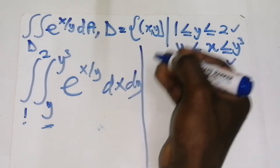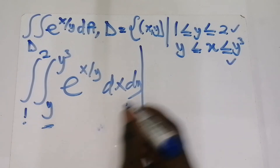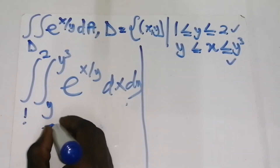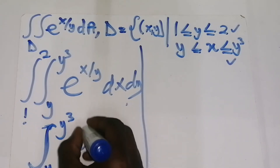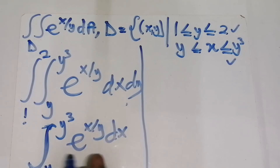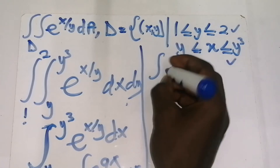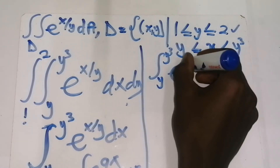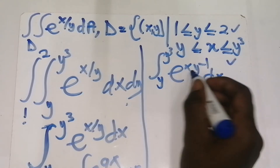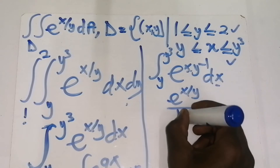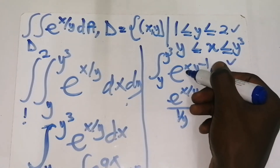After setting up, we solve the dx integral first — the inner one with the unknown variable limits. From integration, we know that integrating e^(ax) with respect to x gives e^(ax) / a. Applying this here, the integral of e^(x/y) with respect to x gives e^(x/y) divided by (1/y), which equals y · e^(x/y).